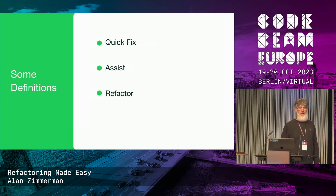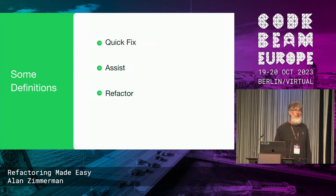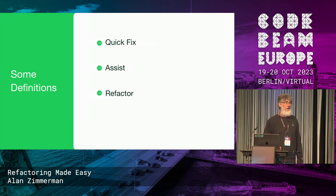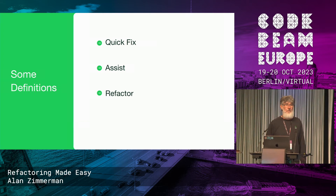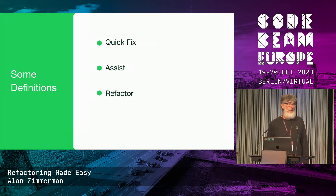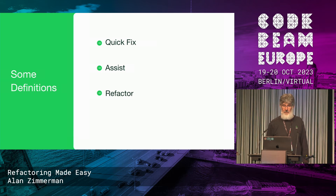Especially in an IDE context, a quick fix is some trivial fix to an identified problem. Something like you have an unused variable, you add an underscore to it — it's a trivial thing, it just does what needs to be done.